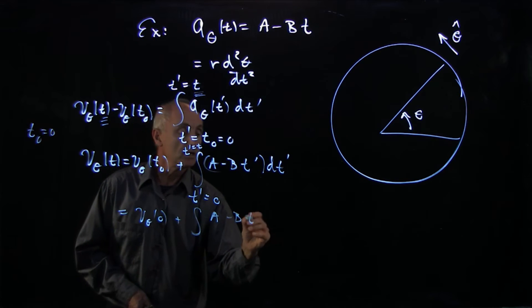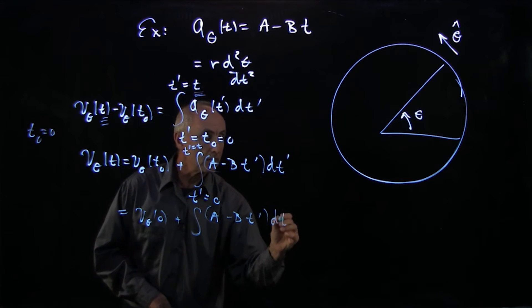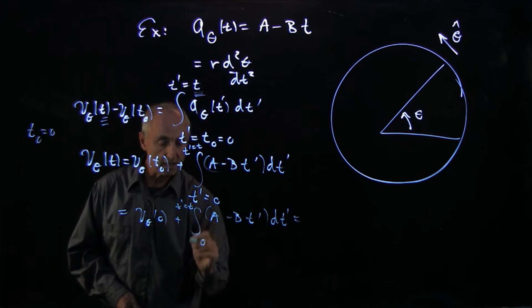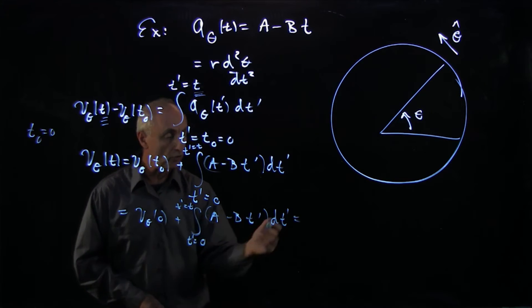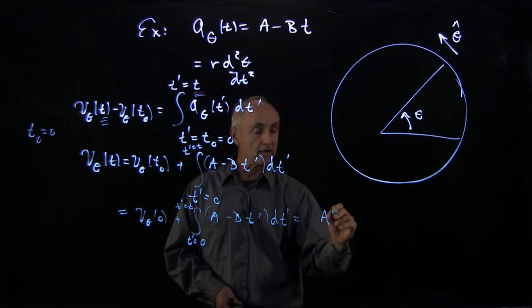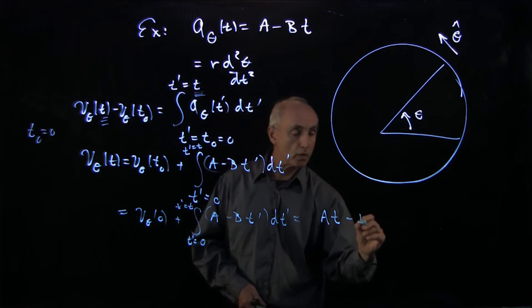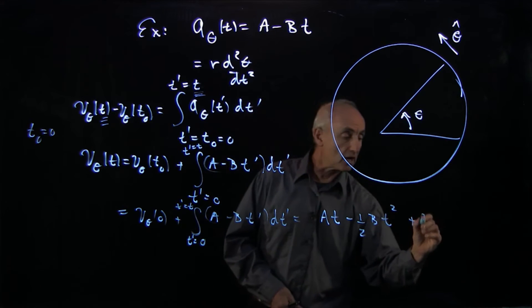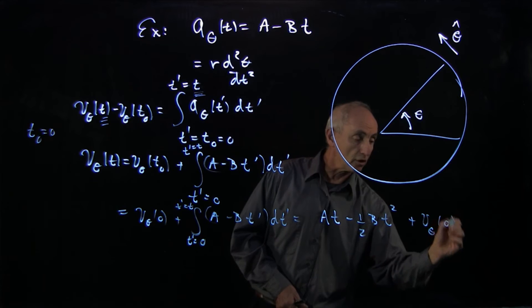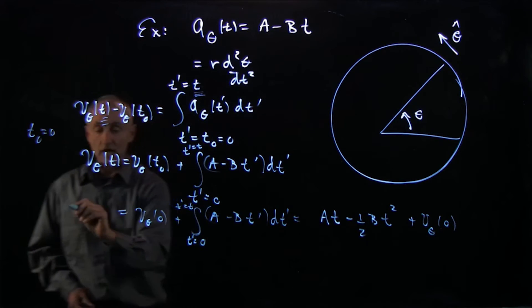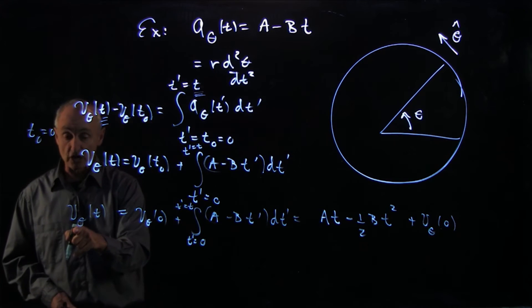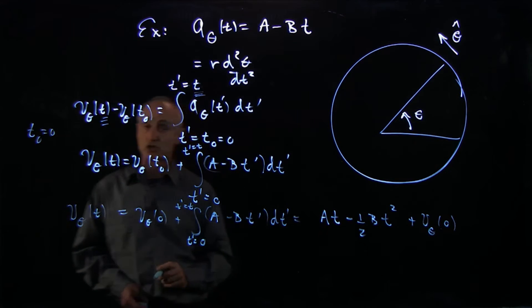And when we do this integral, A minus Bt' dt', that's an integral from 0 to t' equals t, t' equals 0. This integral is not hard to do. We get At minus 1/2 Bt². And there's that constant initial term. And so the velocity at time t of the tangential component of the velocity is given by that expression.